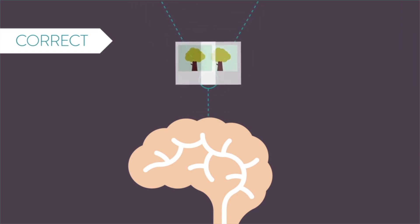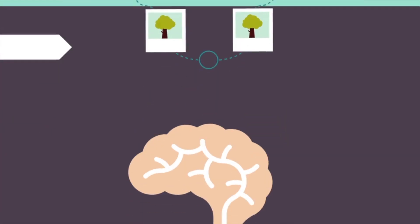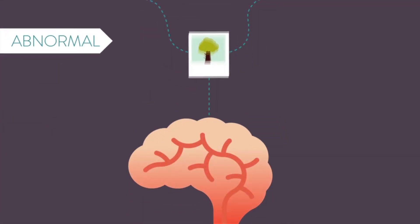But what if this communication doesn't happen perfectly? While each eye may capture a clear photo individually, if there is a misalignment between your eyes, the brain is forced to manually combine every pair of photos.